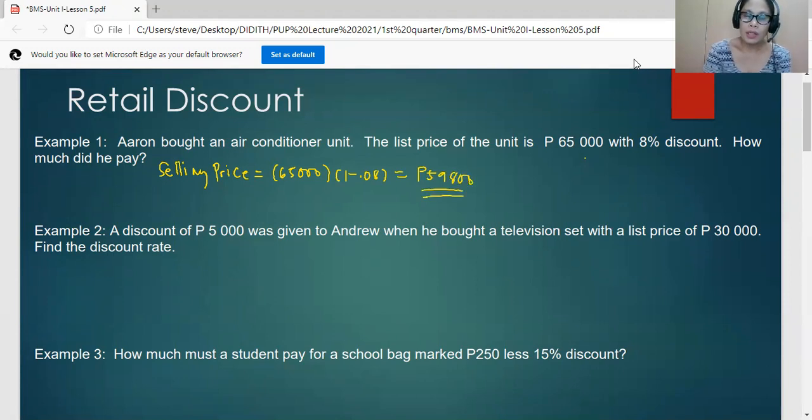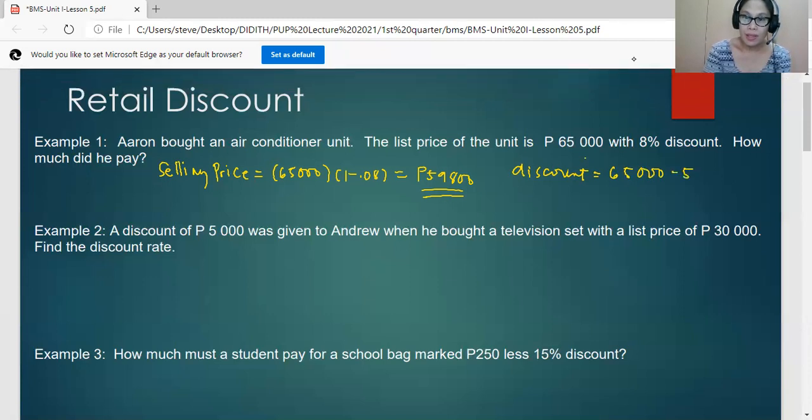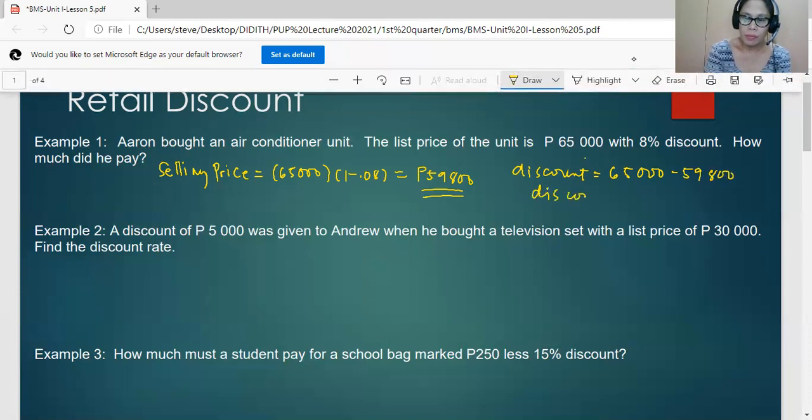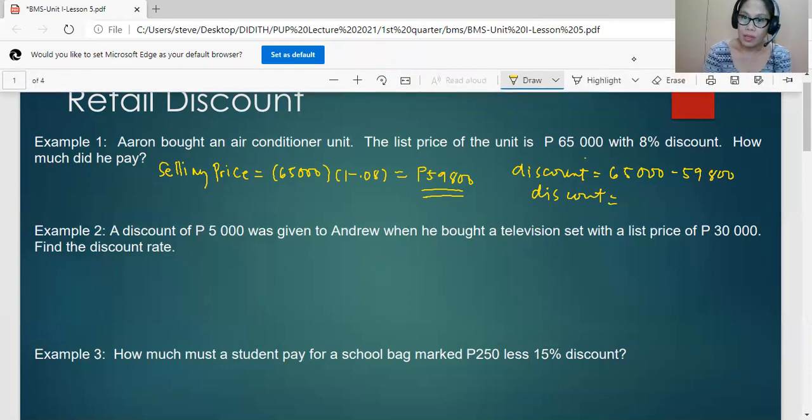If we want to know the discount, discount is actually equal to list price less the selling price. So we have 5,200 pesos as the discount, but the answer to the problem is 59,800.